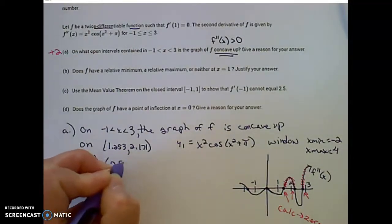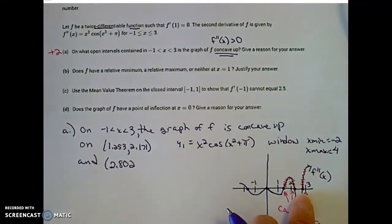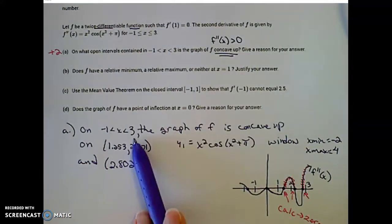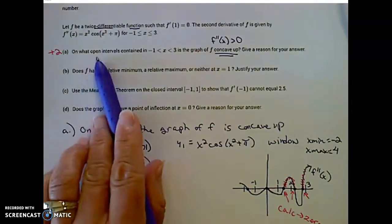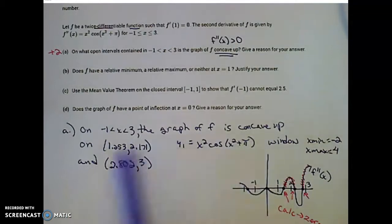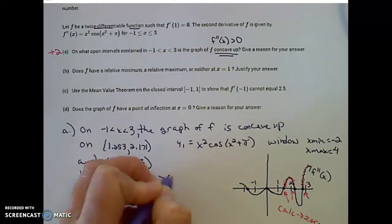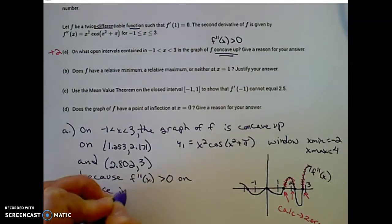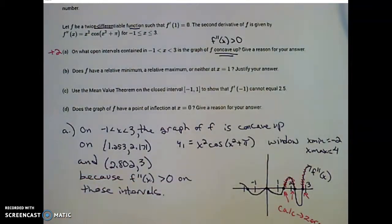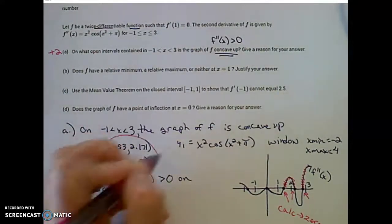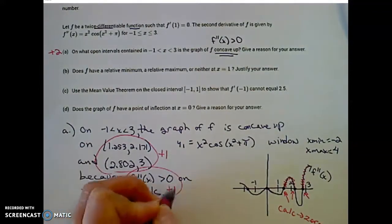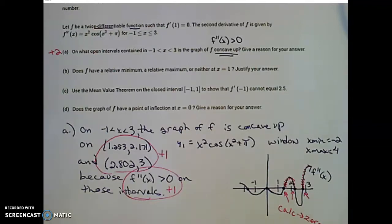From 2.802 — that was the third zero, that x-intercept — and we were only asked on the interval from negative 1 to 3, so I stop at 3. He did ask for open intervals. So between negative 1 and 3, the graph of f is concave up on those two intervals, with the reason that f double prime of x is positive on those intervals. You get a point for the intervals and a point for that explanation.